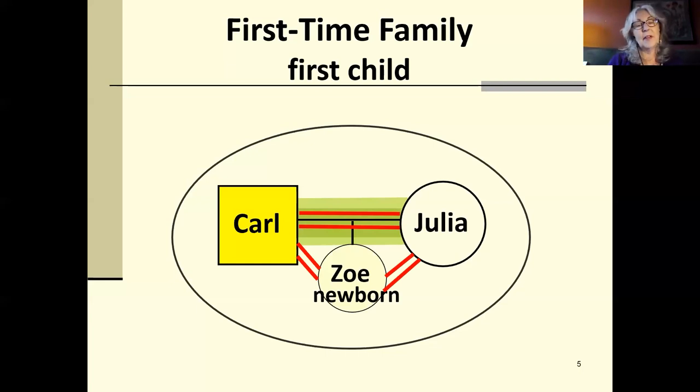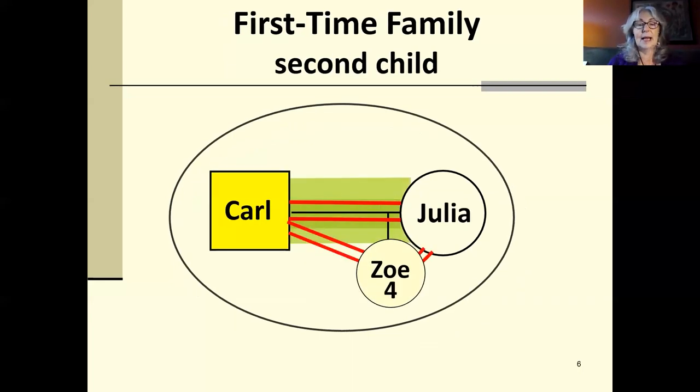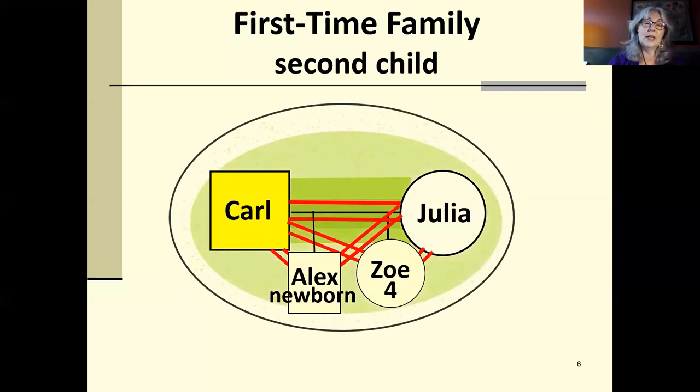In a first-time family, kids enter this already established couple relationship. And really important for our story, kids in a first-time family enter hardwired for attachment to both of their parents and vice versa. In a first-time family, the next child and the next enter this already growing network of connection and sense of how we do things.